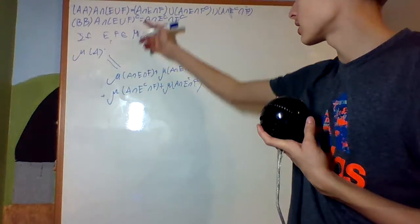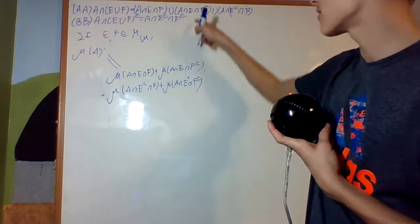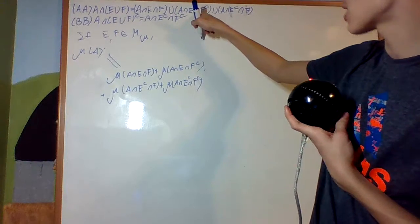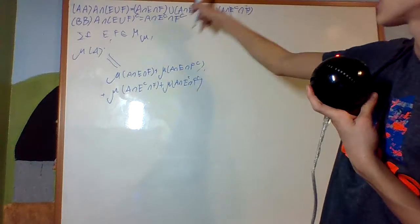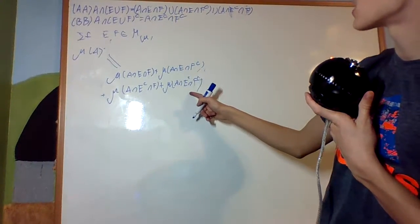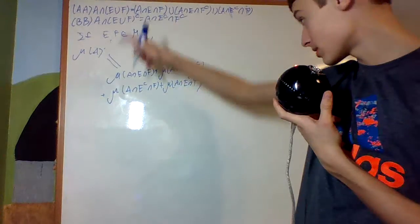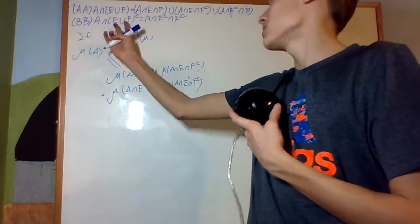A∩E∩F, A∩E∩F complement, A∩E complement∩F, A∩E complement∩F complement — these are the four sets we want to study.